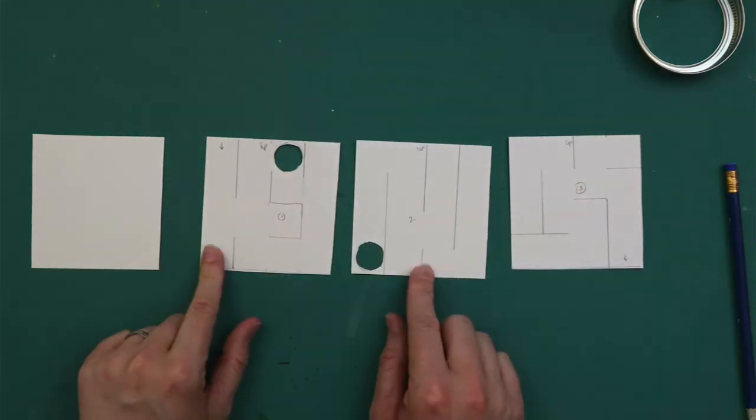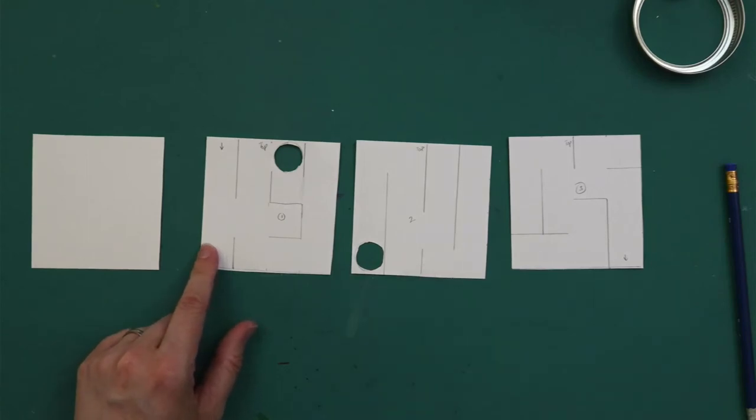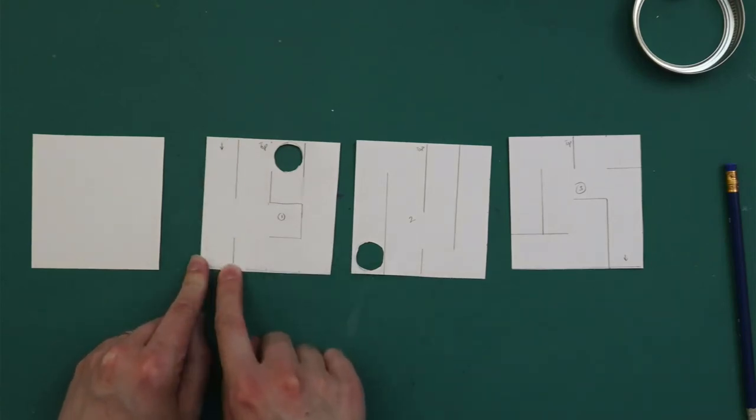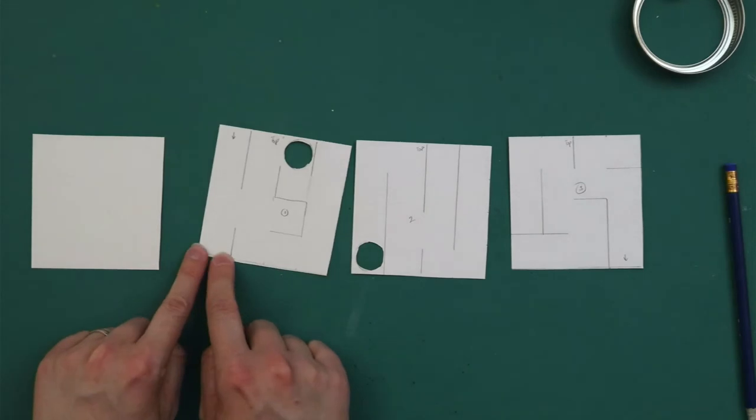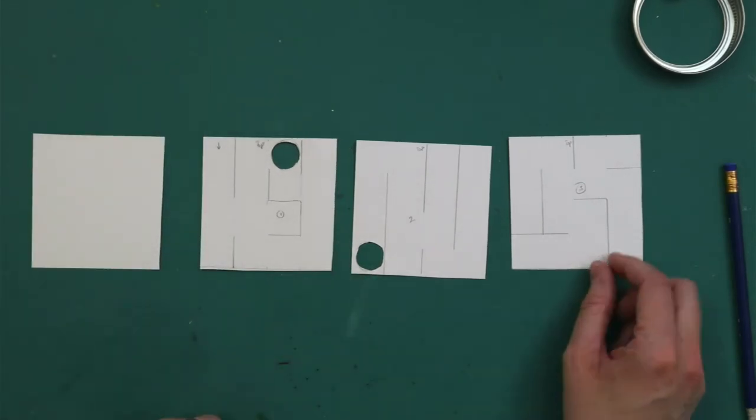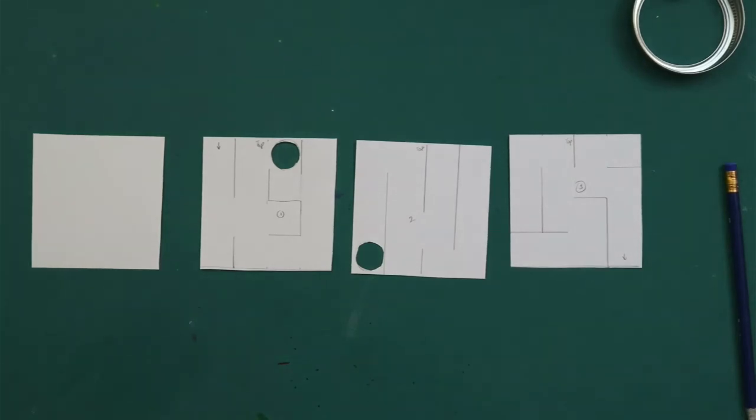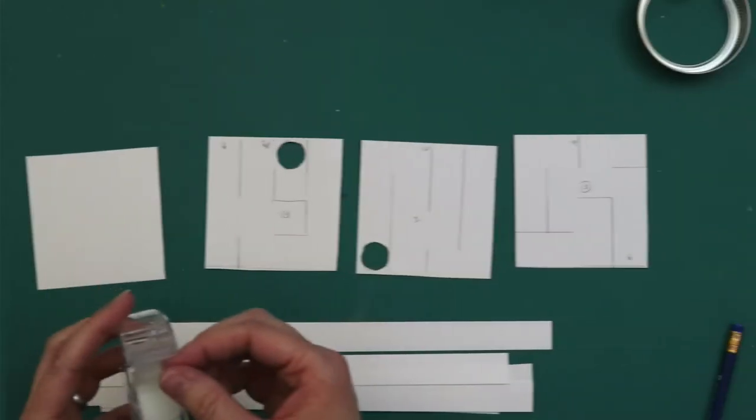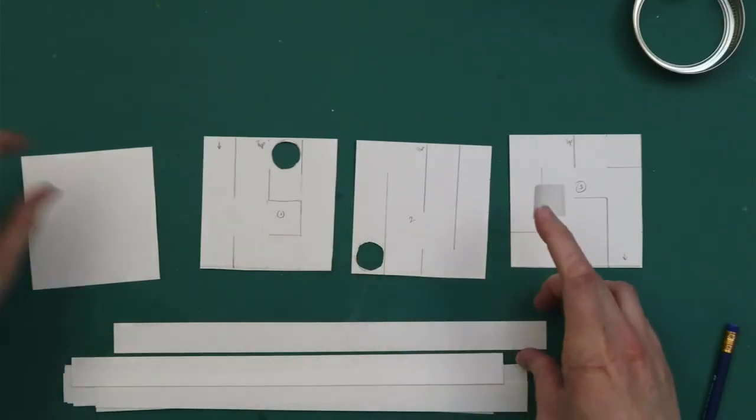So now we need to cut out a whole bunch of strips of paper that are about three quarter inches tall because that's how wide at least I've made the corridors on mine. So cut out a whole bunch of pieces of cardstock about three quarter inches and then come back. So now it is time to assemble.